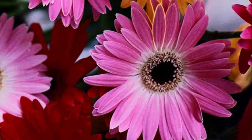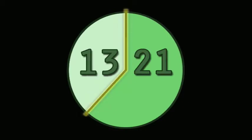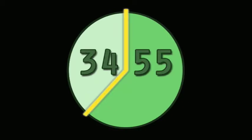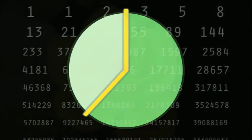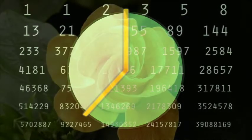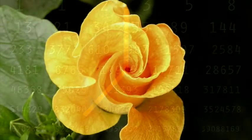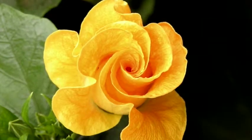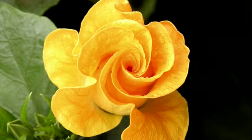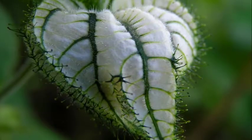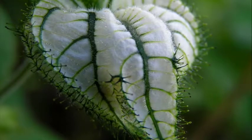Why are these numbers significant? As the Fibonacci sequence progresses, the relationship between successive numbers comes closer and closer to defining the exact value of the golden angle. This intriguing mathematical relationship between the golden angle of plant growth and the number of resulting spirals reminds us that the patterns we see in the natural world are not merely accidental — each one is a reflection of order and careful design.